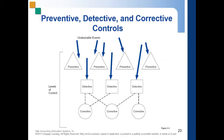Maybe there are no preventive measures yet for those kinds of events, so the next model is your detective controls. These detective controls reveal specific types of errors by comparing actual occurrences to pre-established standards. When detective control identifies a departure from standard, it sounds an alarm to attract attention to the problem. Then lastly is your corrective control, meaning actions are taken to reverse the effects of errors detected in the previous step.